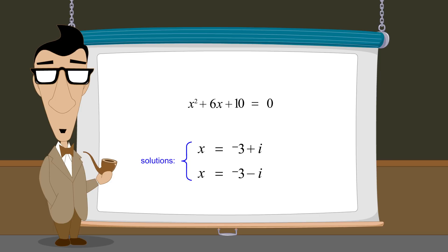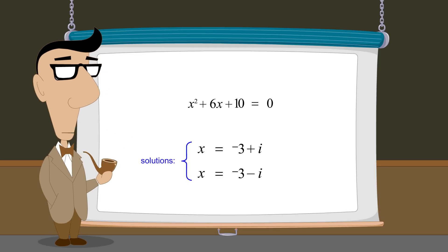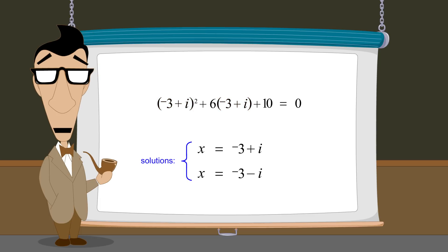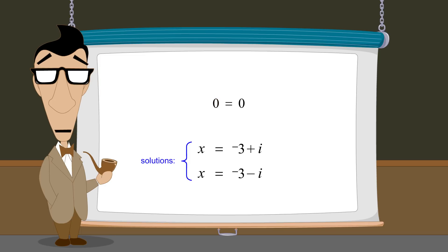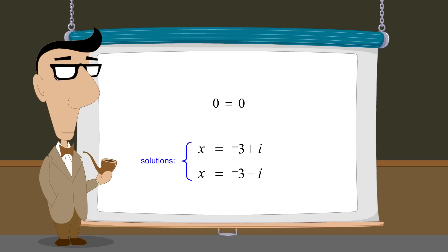As usual, when solving quadratic equations we would like to confirm our results by substituting these x-values back into the original equation to see if they produce a true statement. For instance, if we replace x in the quadratic equation with the solution negative 3 plus i and perform the arithmetic, this expression should reduce to zero, producing the true statement zero equals zero. But before we can do that we must know how to perform arithmetic operations on complex numbers.